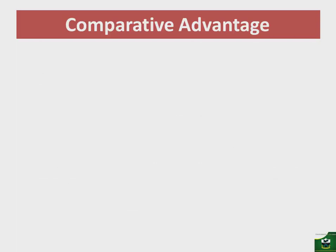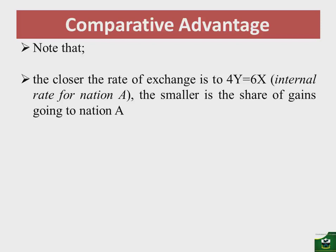It should be noted that the closer the rate of exchange is to 4Y equal to 6X — which is the internal rate for nation A — the smaller is the share of gains going to nation A. If nation A exchanges 6X for 4Y, it will gain nothing from such a trade.